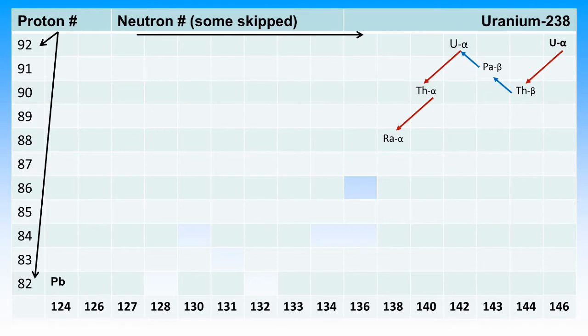Thorium-234 undergoes beta decay. An electron is emitted, and the nuclide neutron number reduces by 1, while the proton number increases by 1, moving up to the left to protactinium-234.